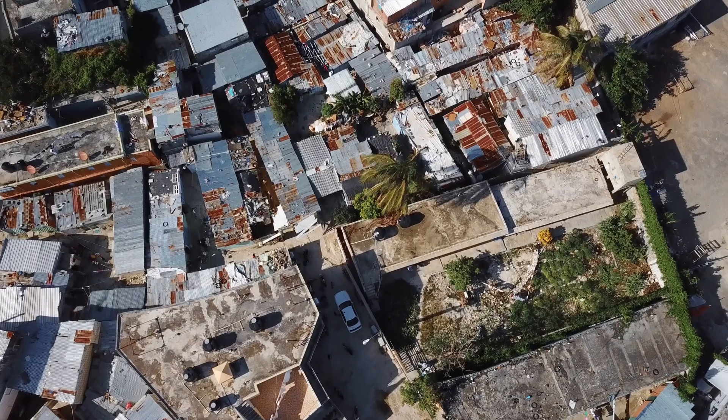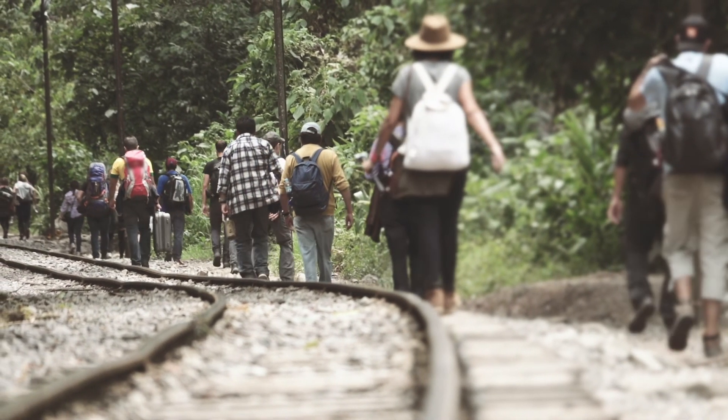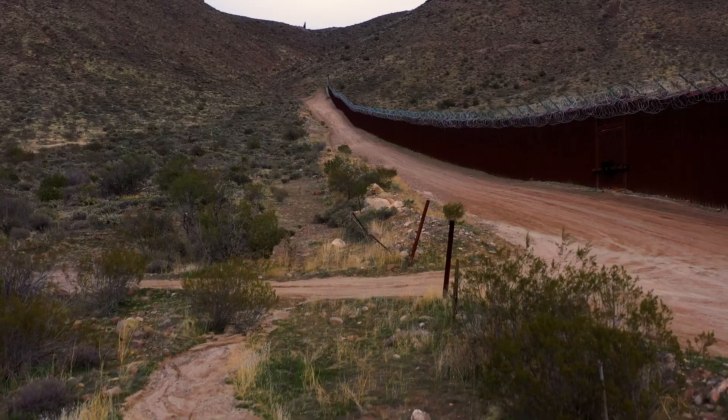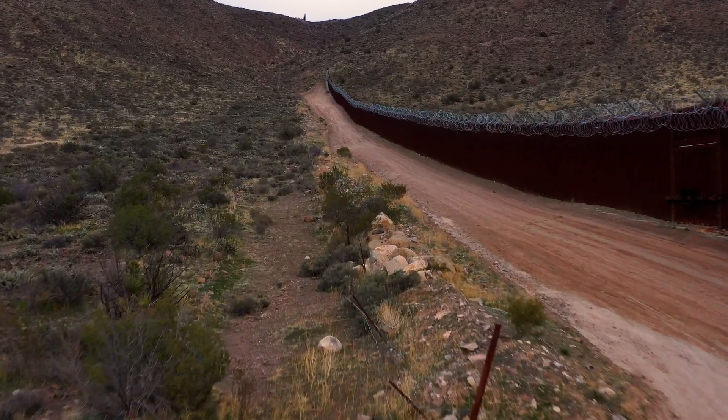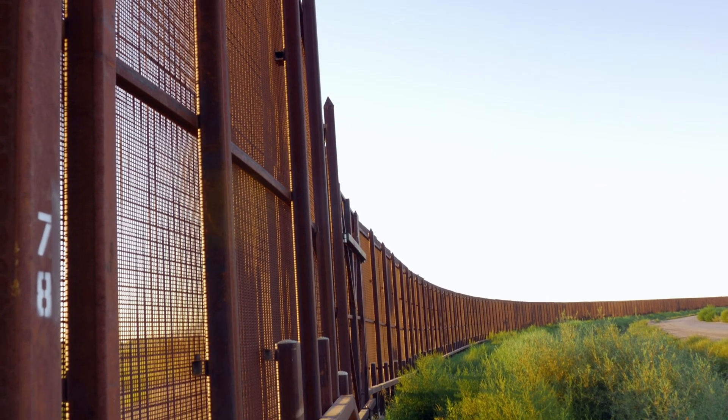For instance, global economic inequality creates patterns of migration that make wealthy countries richer by taking workers away from poorer countries. Borders are violent and failing attempts to control the consequences of not taking inequality, mobility, and social feedback loops seriously.